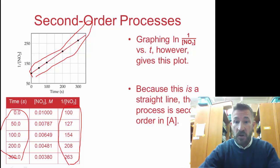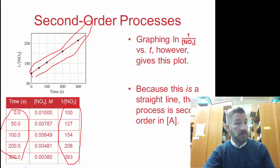Notice we get a nice straight line. That would indicate that this is a second order reaction. Graphing this versus time gives this plot. Because this is a straight line, it's a second order reaction.